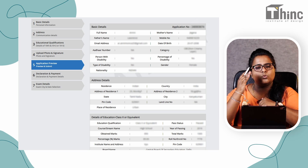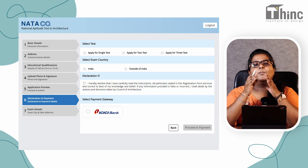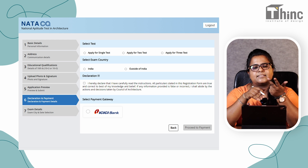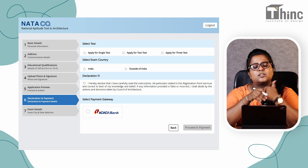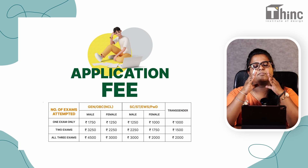If anything is wrong, make the required changes and then proceed to payment. For the payment procedure, you will get three options: single test, two tests, and three tests. You can select whichever you prefer, and your payment fee will vary according to your selection.